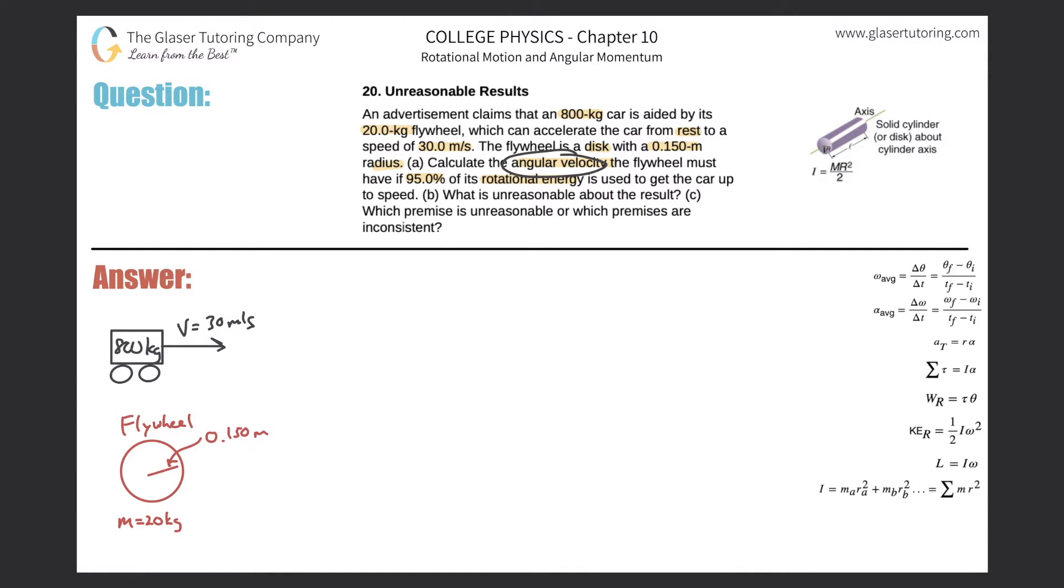First thing is that they're asking us for angular velocity and they're telling us this other term of rotational energy, so I start thinking: do I know a way that these two variables are connected formulaically? And I do. I know that they're connected this way: the kinetic energy due to rotation is equal to one half multiplied by the moment of inertia multiplied by the angular velocity squared.